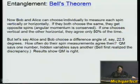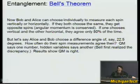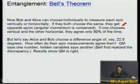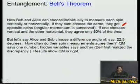Bob and Alice can each choose individually to measure spin vertically or horizontally. If they choose the same axis, they get opposite spins 100% of the time. If one chooses vertical and the other horizontal, they agree only 50% of the time. If Bob doesn't even know if Alice is measuring, he gets 50% up and 50% down with no clue what Alice is doing. The quantum mechanical strangeness is the seeming faster-than-light connection: one particle is measured spin up, so the other must instantly be spin down. Only later, when you compare their data, do you find: this one was up and that one was down — always opposite.